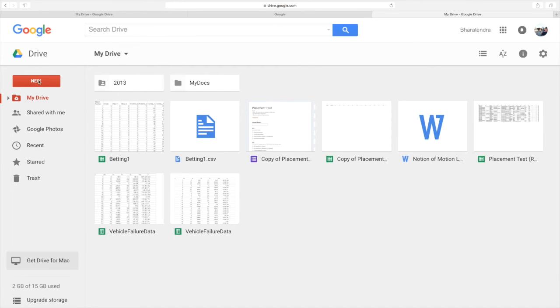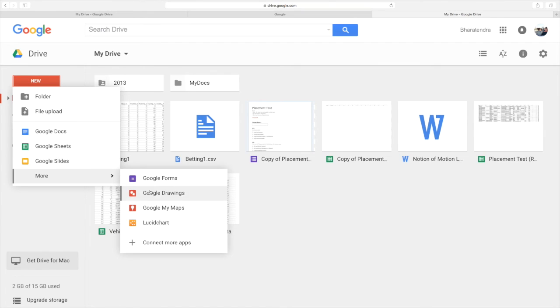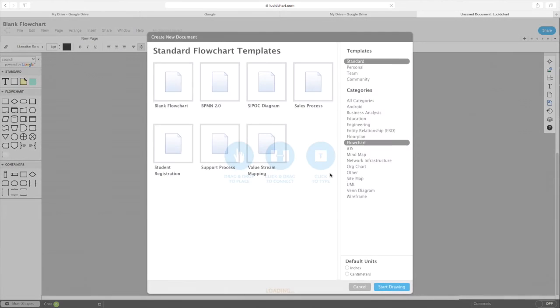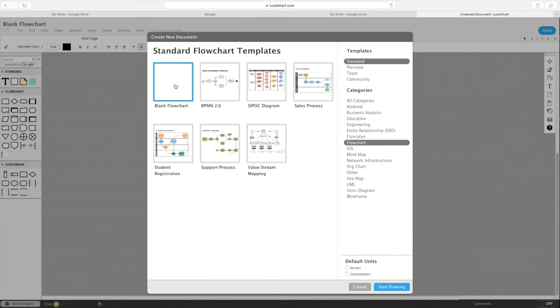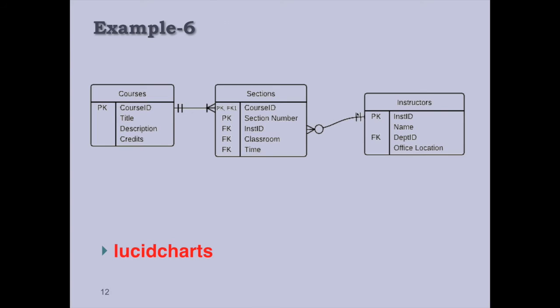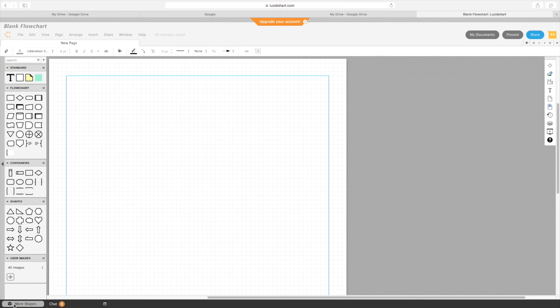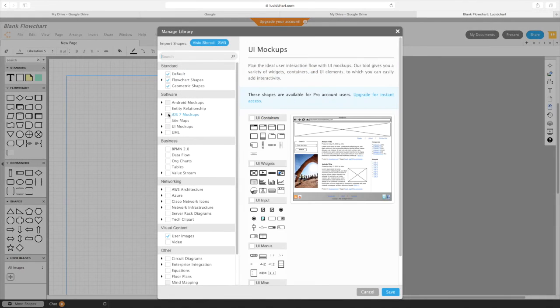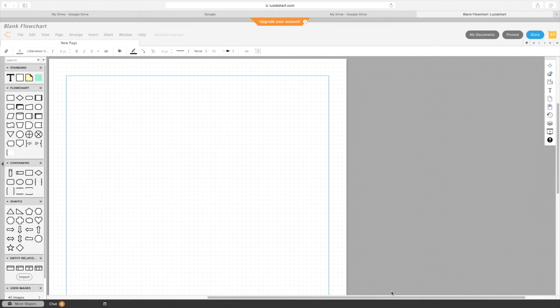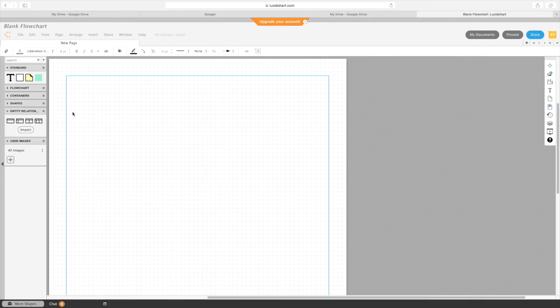Next time you click on New and then More, you will see this option for Lucidchart. Let's click on that. I will allow these. Let me just open a blank flowchart. I will skip tips. I am going to draw this chart using the tools in Lucidchart. Go towards the bottom where you see More Shapes, click on that and then select Entity Relationship. Once you check that and say save.